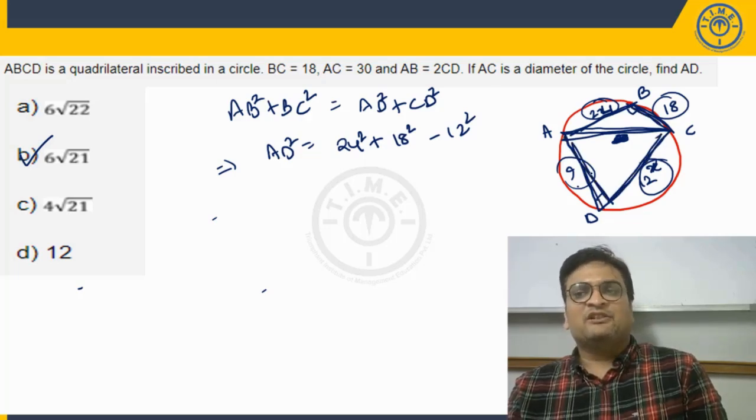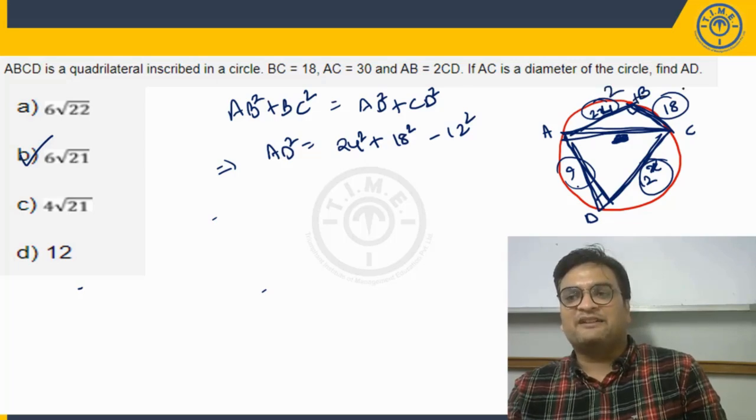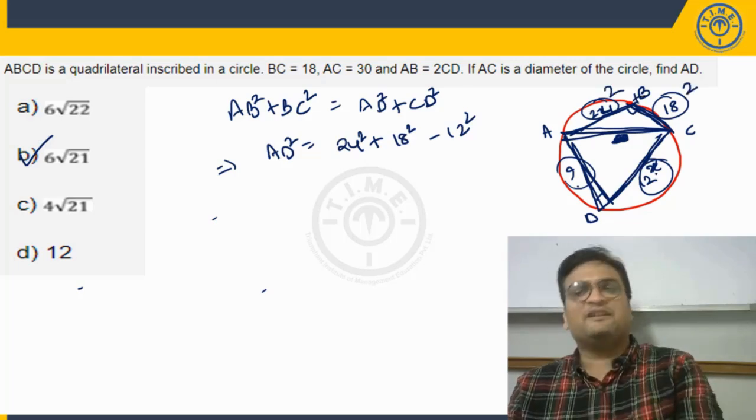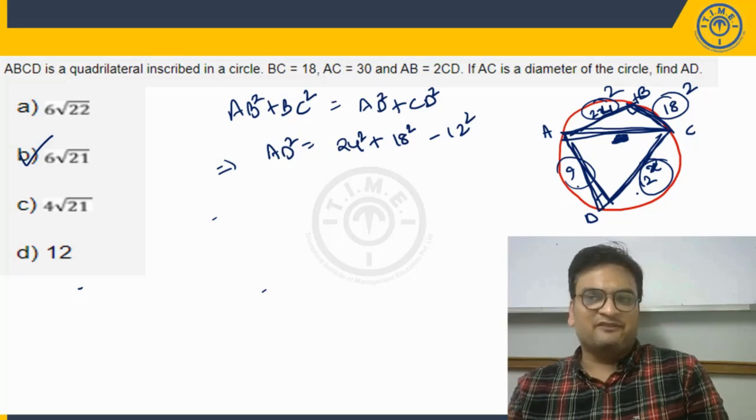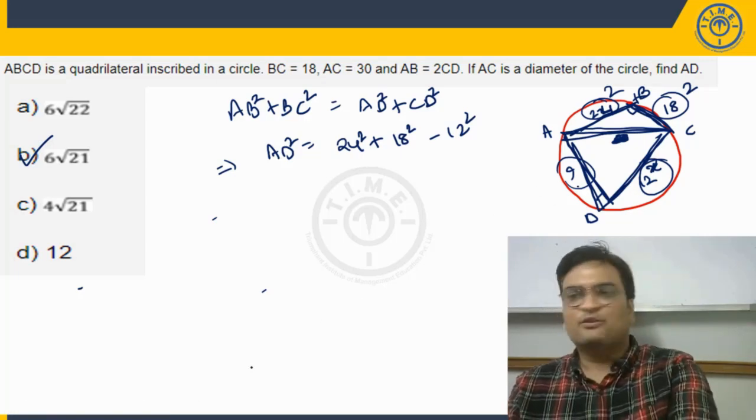This is given. Now we are asking for this. So here we can say this square plus this square will be equal to this question mark square plus this 12 square. We can still find the value of this question, all right. I hope you are clear with this.